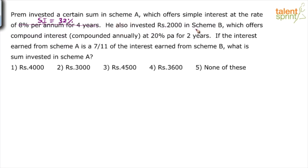Next he says he also invested Rs.2000 in scheme B, which offers compound interest. The other one was simple interest. Now he's talking about compound interest, compounded annually at 20% per annum for two years.